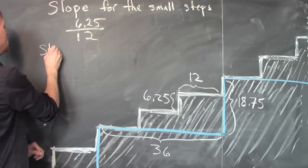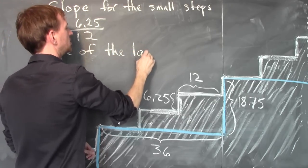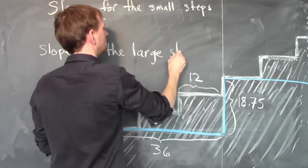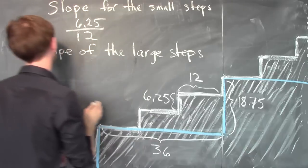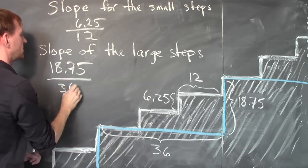So the slope of the large steps is 18.75 over 36.